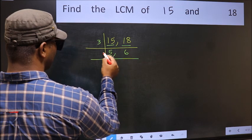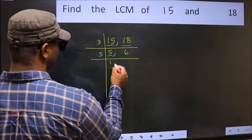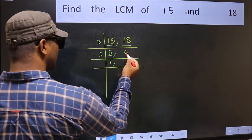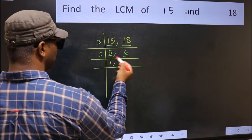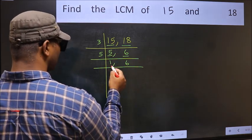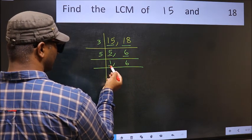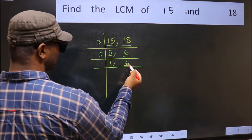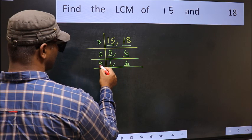Now here we have 5. 5 is a prime number. So 5 wants 5. The other number 6 is not divisible by 5. So you write it down as it is. Now we got 1 here. So focus on the next number 6. 6 is 2, 3 is 6.